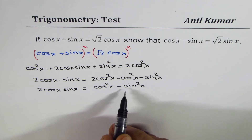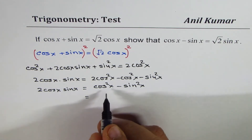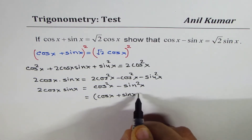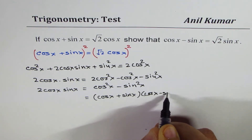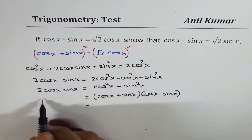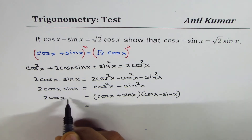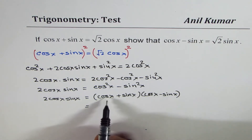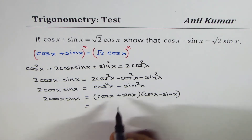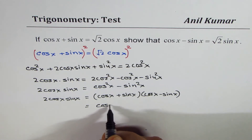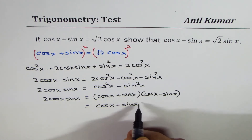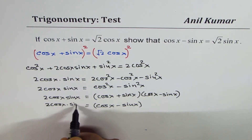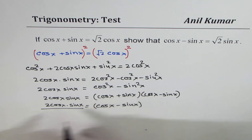Cos²x minus sin²x can be factored as (cos x plus sin x)(cos x minus sin x), which equals 2 cos x sin x. Now we need to find cos x minus sin x, so we divide both sides by (cos x plus sin x). We get cos x minus sin x equals 2 cos x sin x divided by (cos x plus sin x).